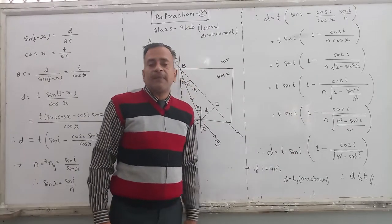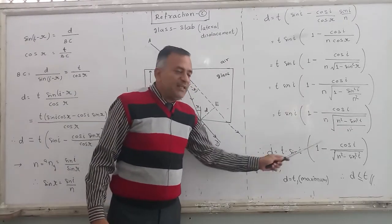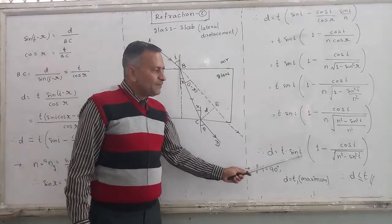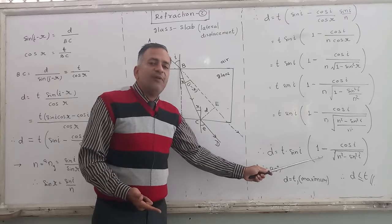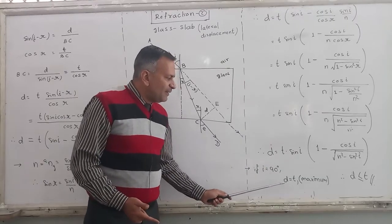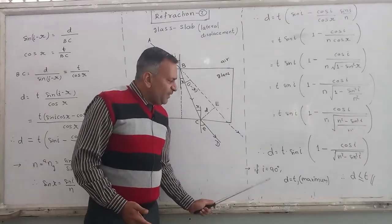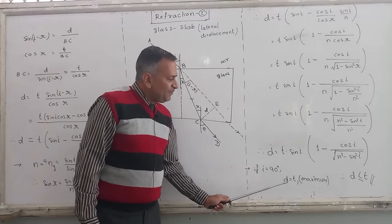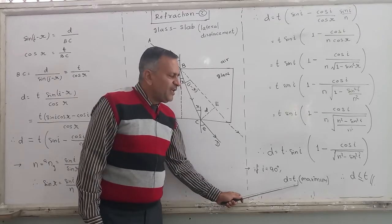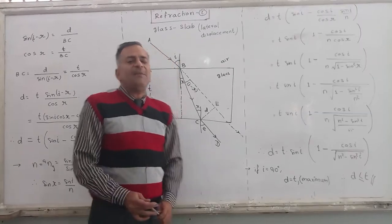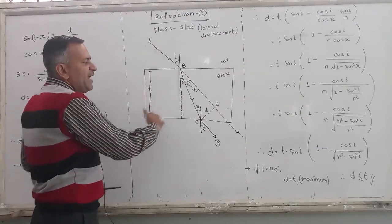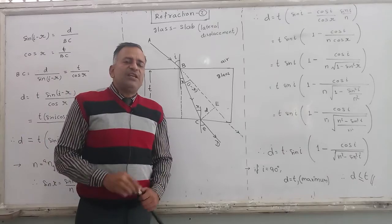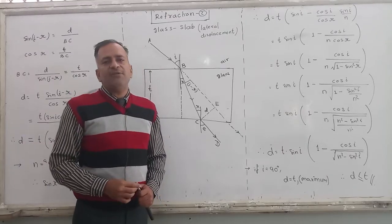Cos 90 becomes zero. This term becomes completely zero. Sin 90 equals 1. So D times 1 times 1 is what? It equals T. So if angle of incidence is 90, then lateral displacement equals T. Lateral displacement becomes equal to the thickness of your glass slab, but it can never be more than that.